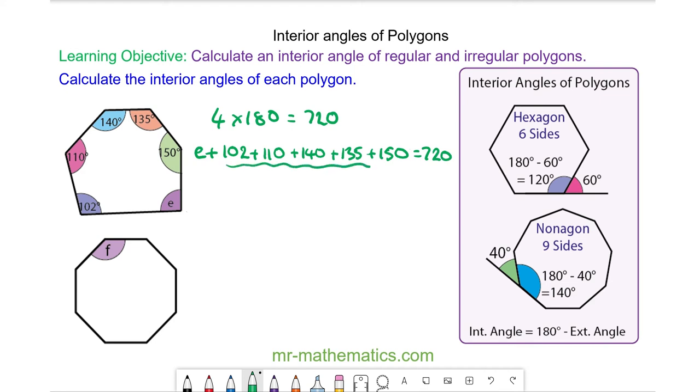We can simplify this sum as E plus 637 is equal to 720. Take away 637 from both sides and angle E will equal 83 degrees.